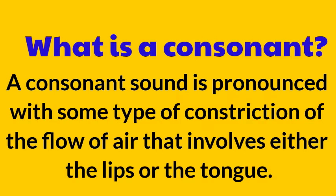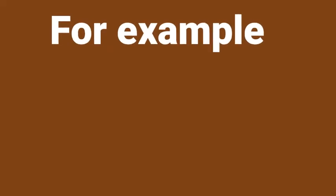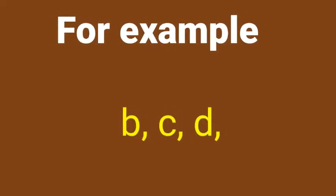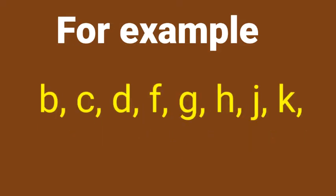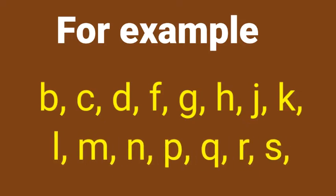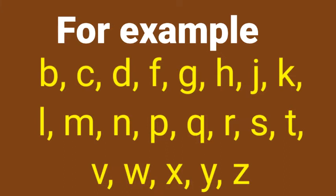یعنی consonant وہ حروف ہے جو آواز نہیں دیتے اور یہ ایسے حروف ہے جو منہ سے نکلتے ہیں ہوا کے ذریعے، مگر اس کو ہونٹ اور زبان کے مدد سے روکا جاتا ہے، جس کو ہم consonants کہتے ہیں۔ For example: b, c, d, f, g, h, j, k, l, m, n, p, q, r, s, t, v, w, x, y, z.